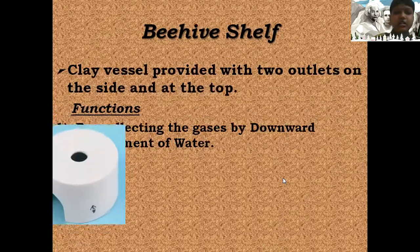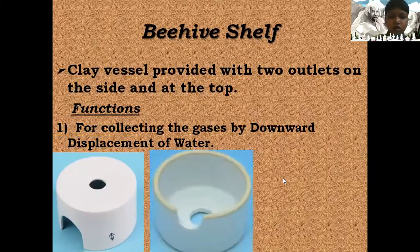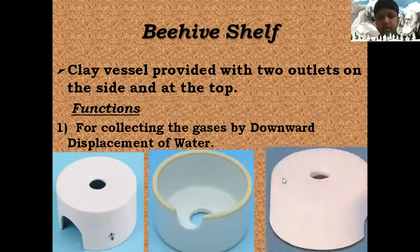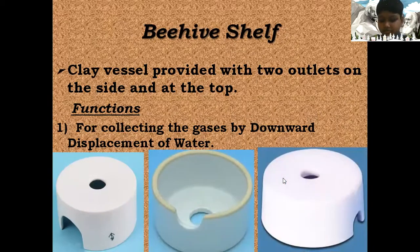Beehive shelf: Clay vessel provided with two outlets, at the side and at the top. Functions: For collecting gases by downward displacement of water.